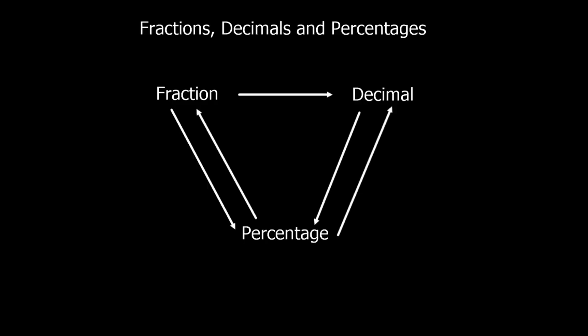Say we've got a fraction 9 tenths. I can change this fraction to a decimal or a percentage. To change a fraction to a decimal, I do the top number, numerator, divided by denominator. So 9 divided by 10 is 0.9. That's a fraction to a decimal.